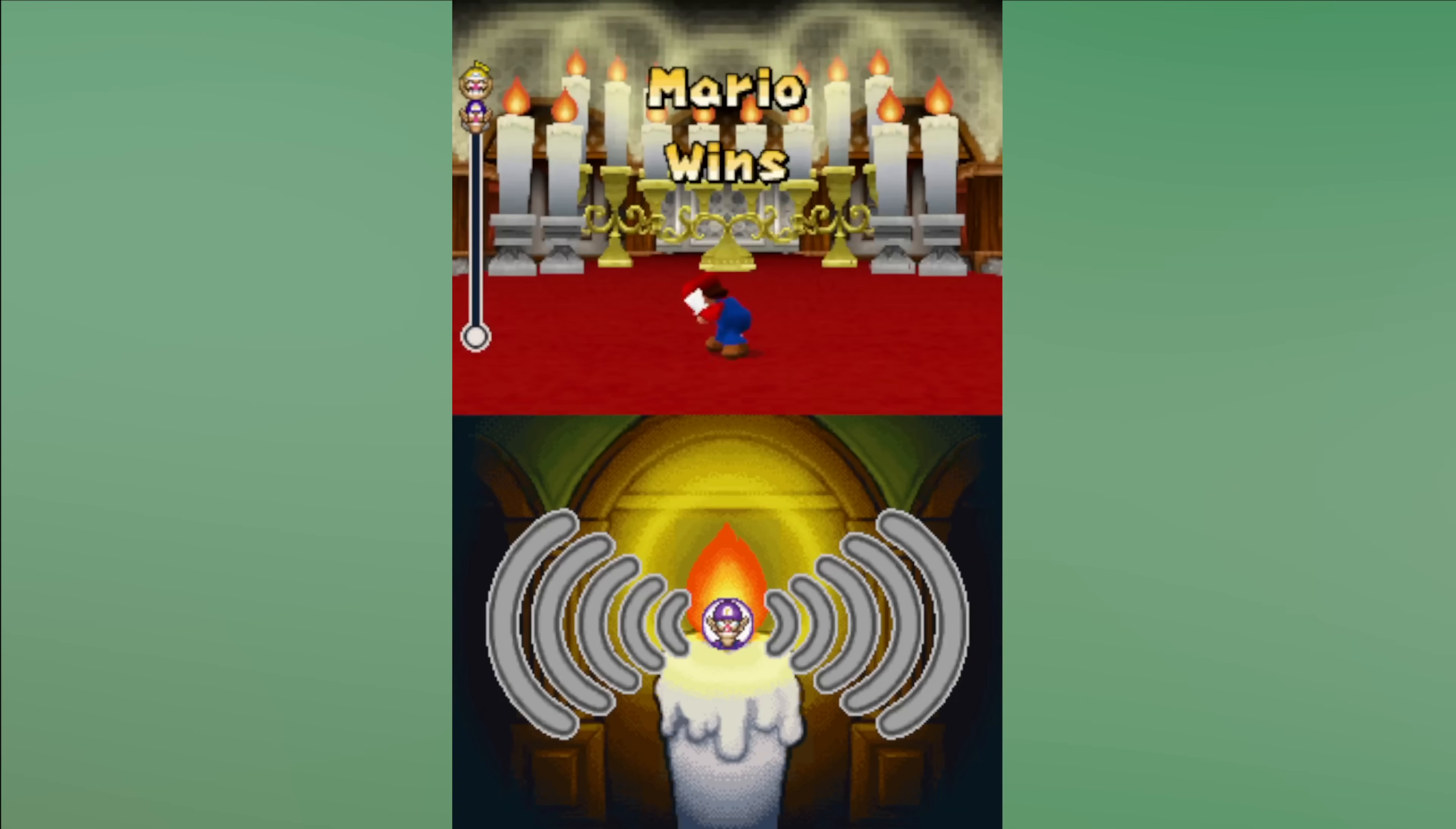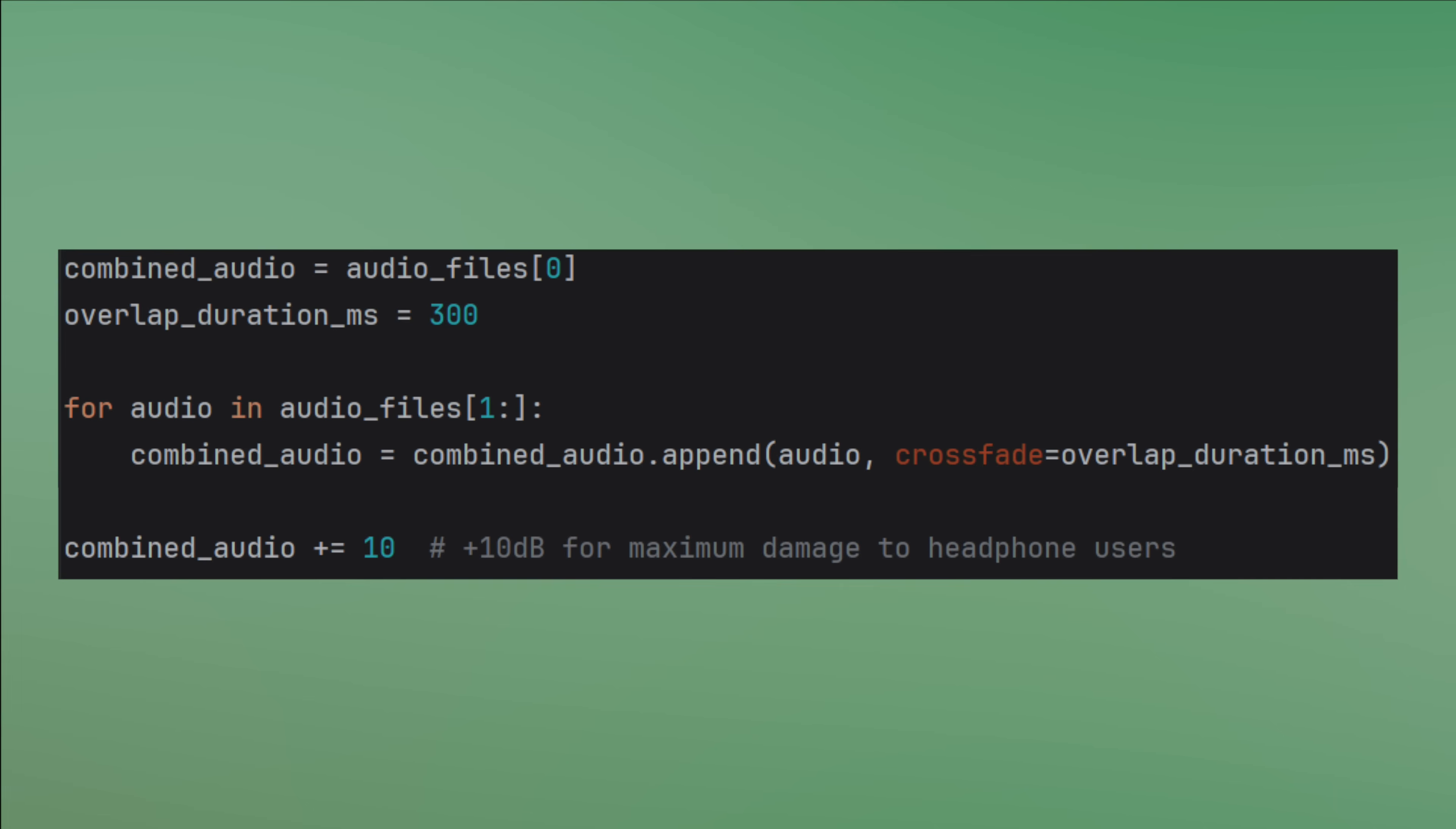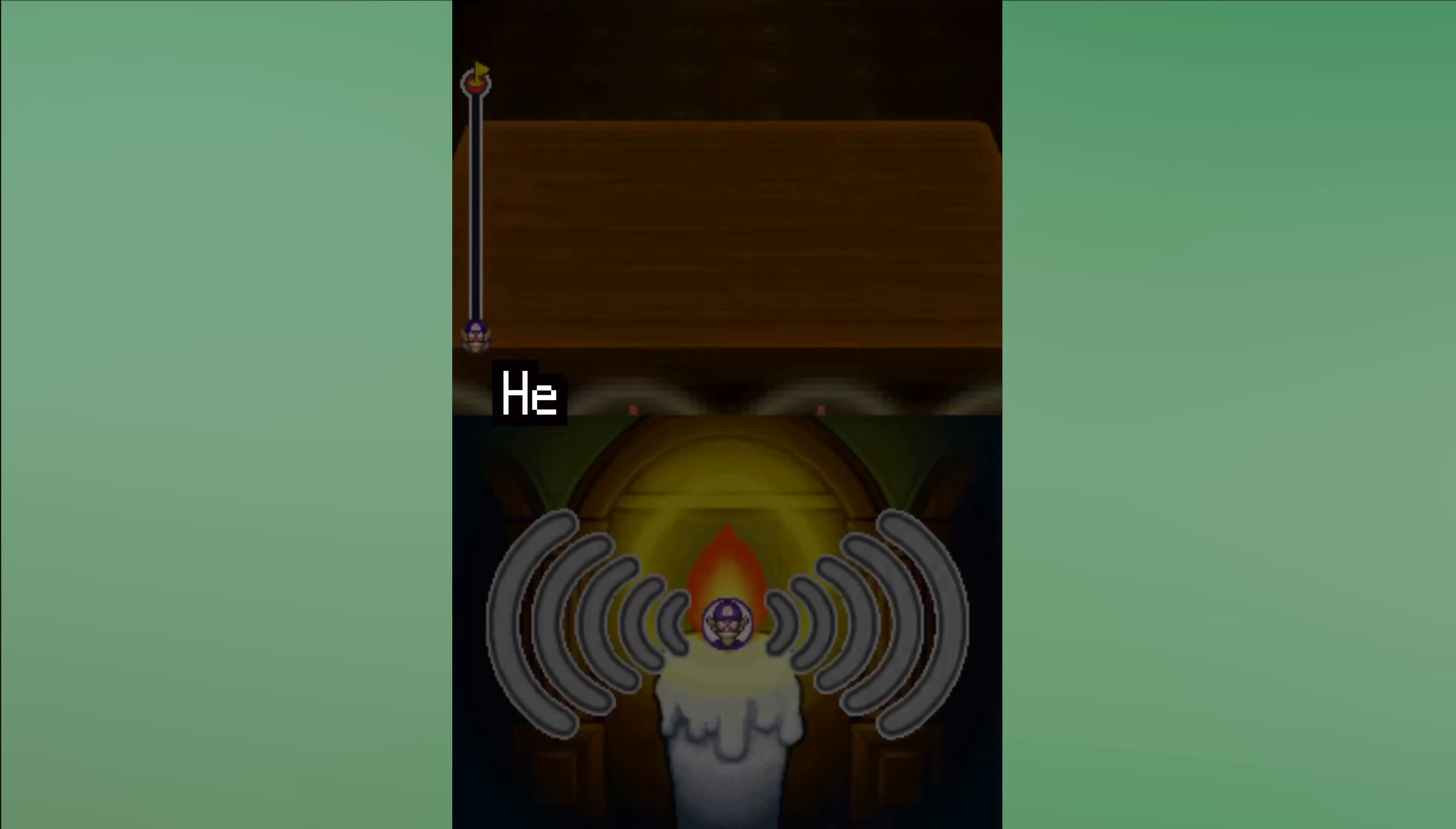Something is happening but it seems the audio isn't loud enough to bring us to victory. Good thing it's an easy fix and we can just crank up the volume of our input file. In pydub you can literally just add a number to an audio segment object to increase its volume by that amount of decibels. I also added a crossfade effect so the sounds blend a bit better. Here's the winning run.